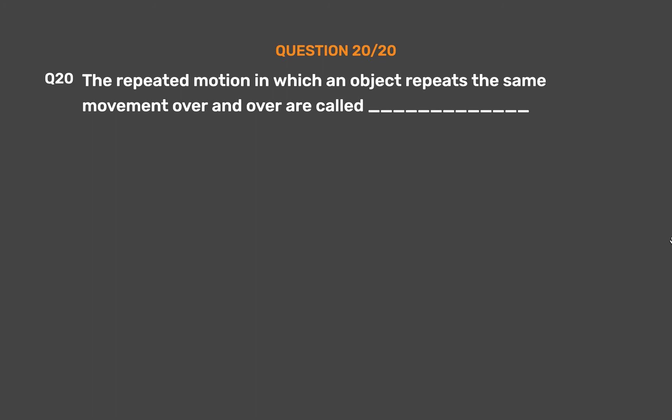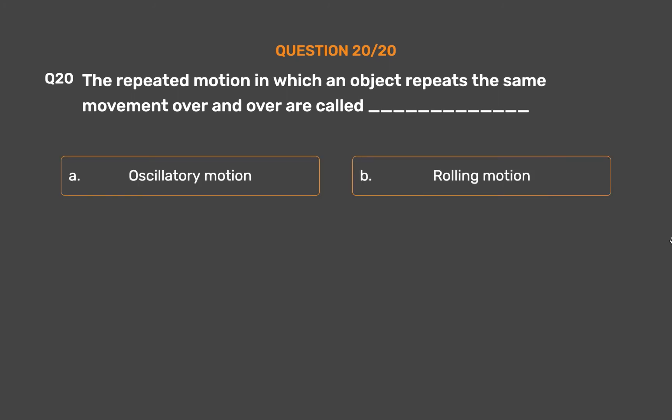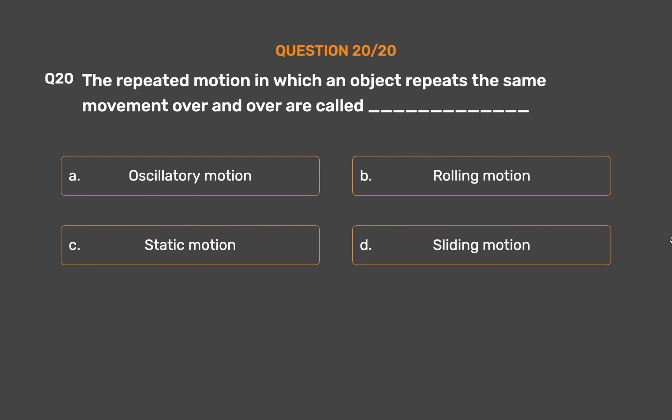Question number 20. The repeated motion in which an object repeats the same movement over and over is called underscore. Option A, Oscillatory motion; Option B, Rolling motion; Option C, Static motion; Option D, Sliding motion.